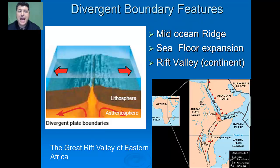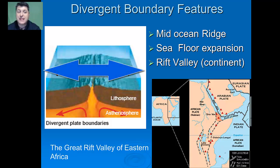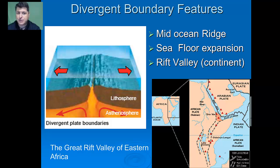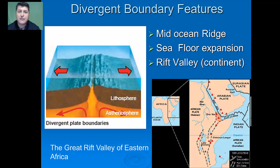Finally, we have divergent plate boundaries. This is where two plates actually move apart from each other. This is where we have our mid-ocean ridges, which result in sea floor expansion. We've also seen this in continental plates, particularly in Africa in the Great Rift Valley. As those plates pull apart in the oceans, magma rises from below and creates mid-ocean ridges, increasing sea floor expansion.